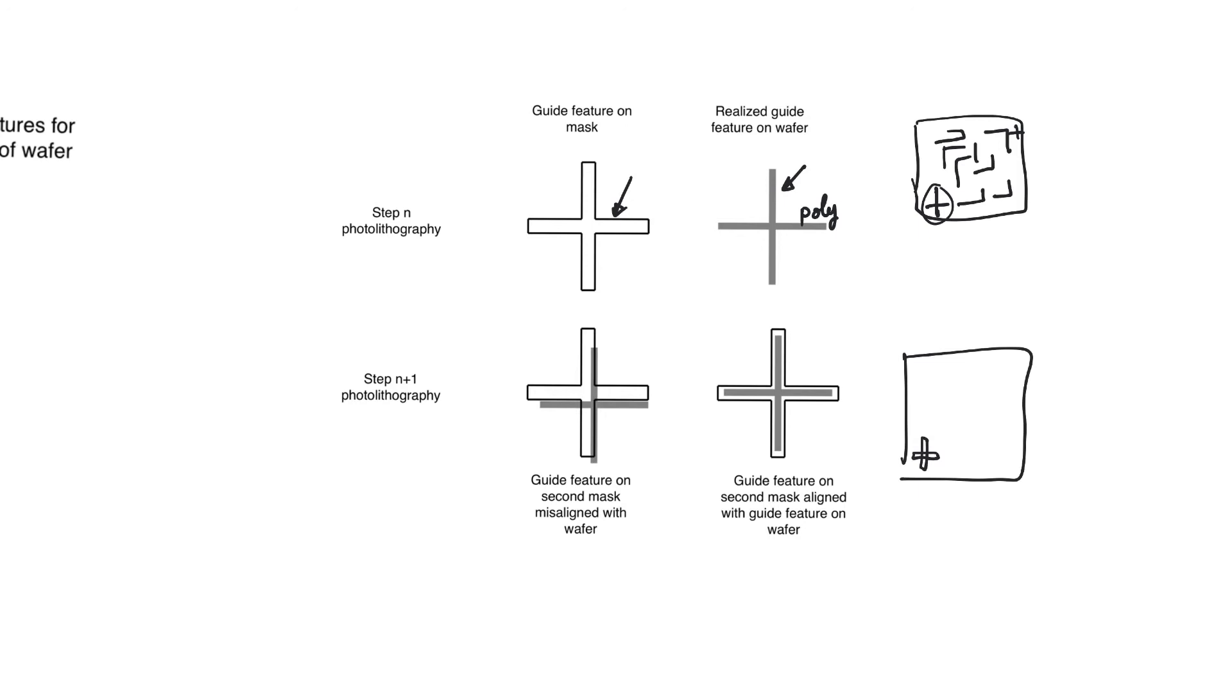And what we have to do is we have to align the mask for layer n plus one so that the feature that was created from layer n is visible under the mask of layer n plus one. When we do this, we can ensure that we have created perfect alignment between the two layers.